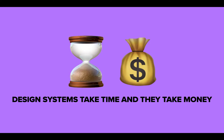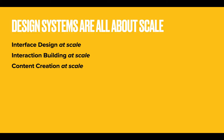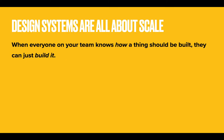We know they take time, and time is money — and that means that design systems take money. You can't shortchange this; you should take the time to do it right. So why bother? This seems like an awful lot — we've got to agree on buttons, agree on typography, agree on the tools we're going to use. What are we getting out of this? The answer — to borrow a business word — is scale. Design systems are all about it. You're going to get interface design at scale, interaction building at scale, content creation at scale. When everyone on your team knows how a thing should be built, they can just go build it. They don't have to stop and think. They don't have to ask questions. They just know.